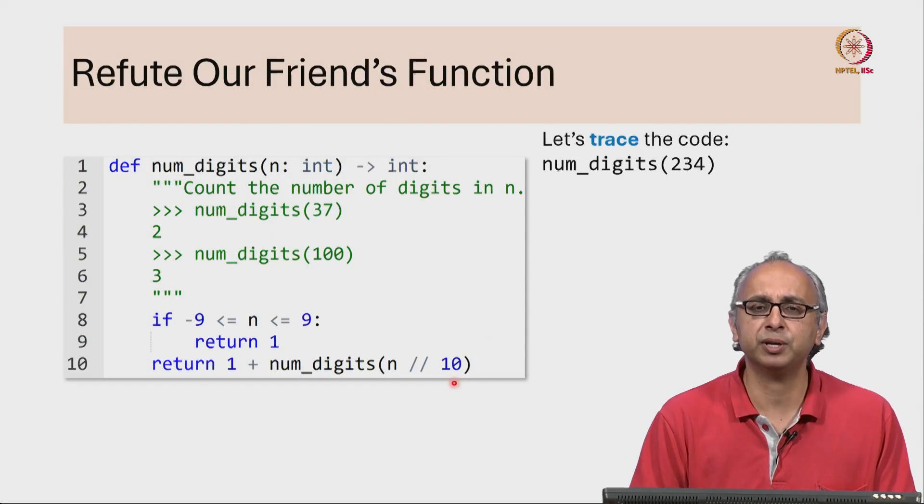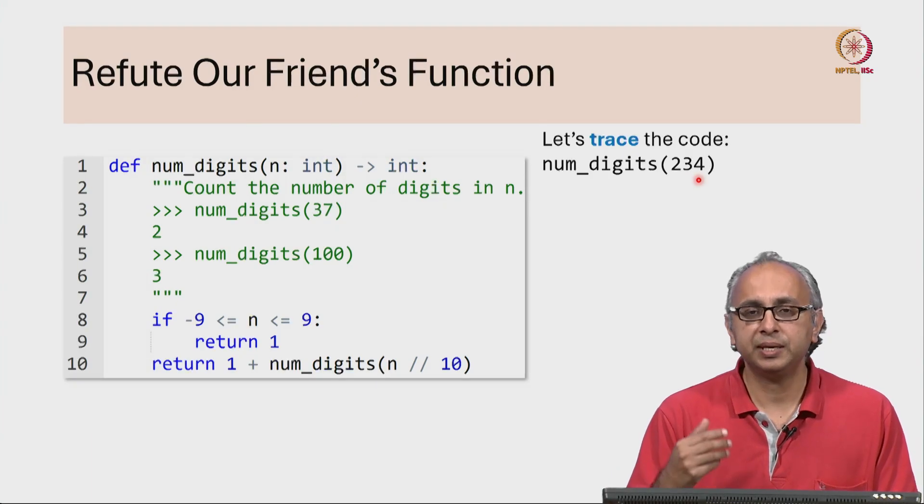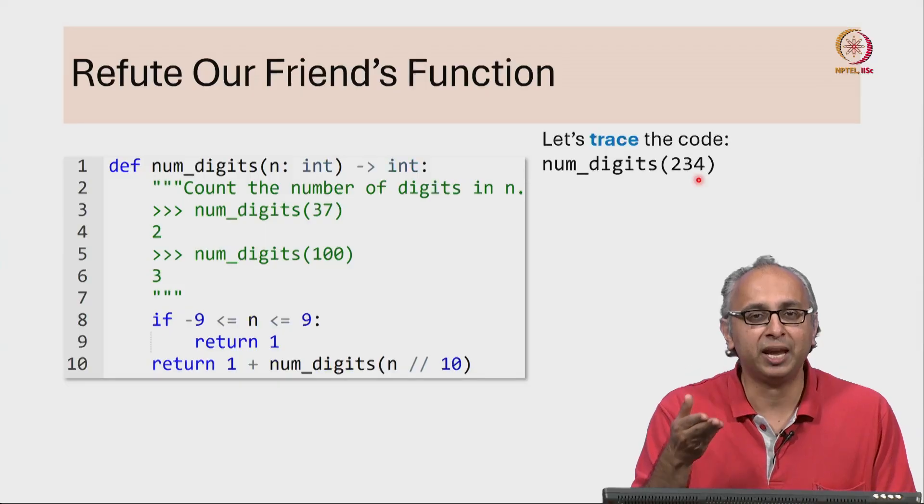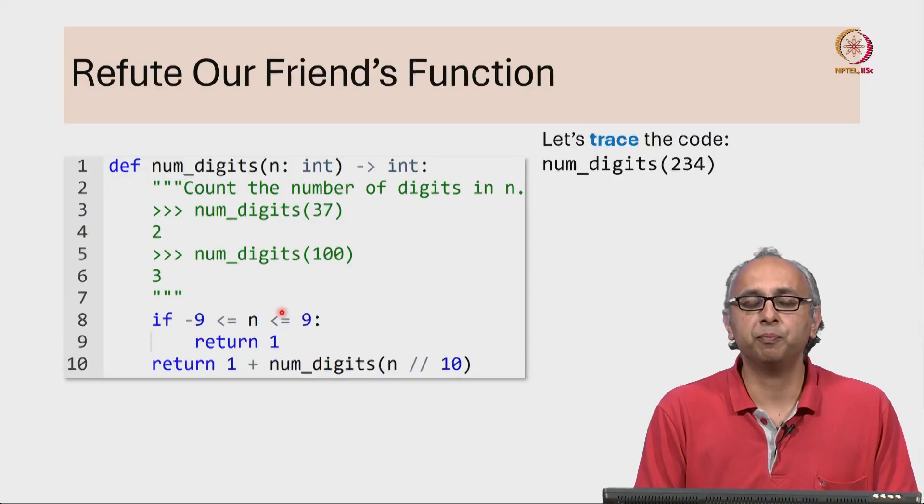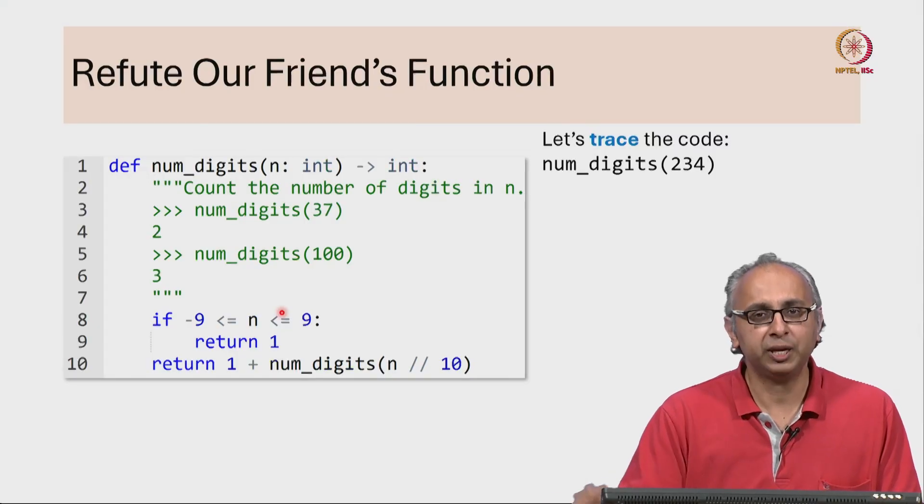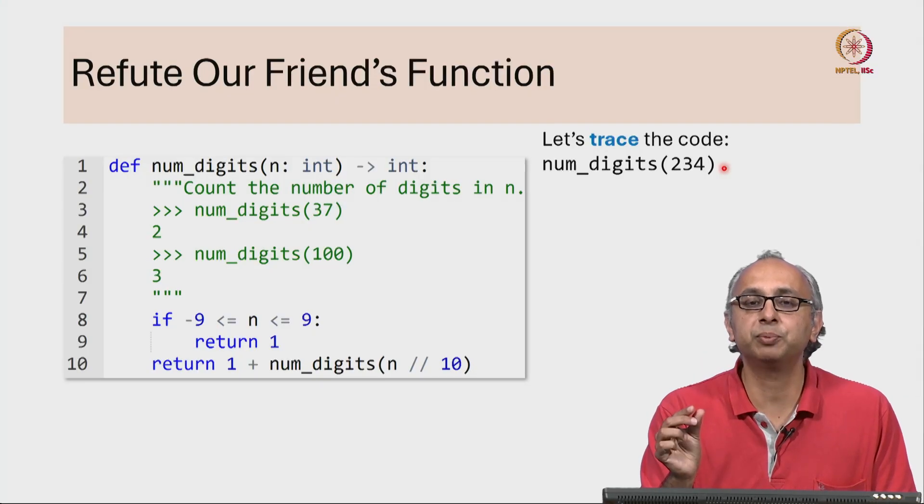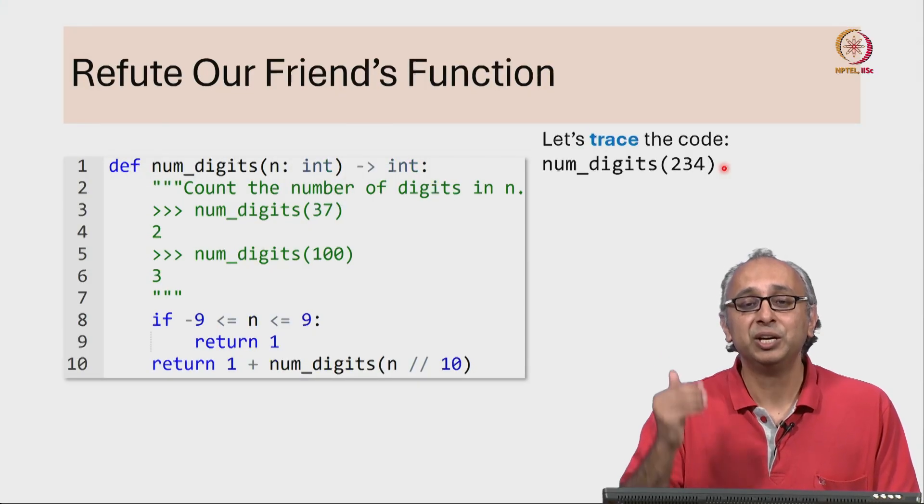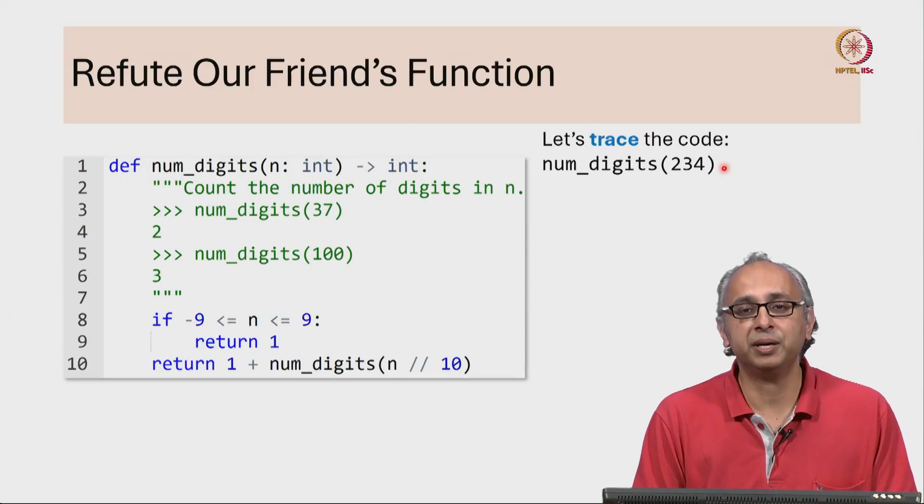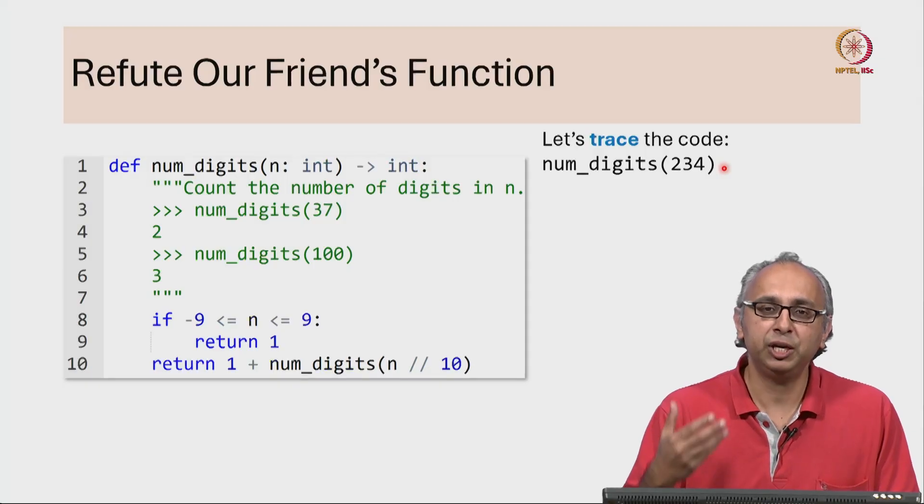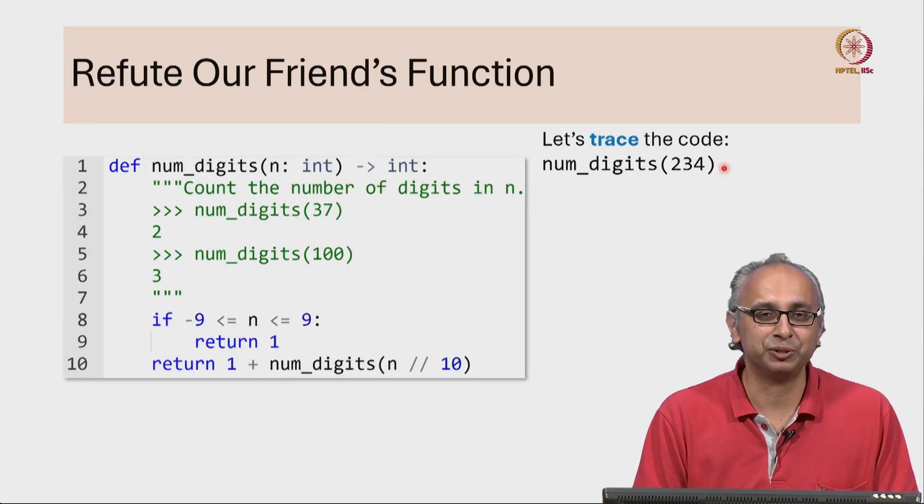Let's actually trace our friend's function on a concrete input. So what I am explaining to you here is a way of comprehending the code. You should try and comprehend the code as much as you can in its general form but whenever you are stuck, don't forget you always have this trick. You can always trace it on concrete inputs. I would like you to develop the ability to mentally trace the code but you always have Python tutor to help if something is unclear. Eventually, you should through these examples be able to figure out what the code is trying to do in general.